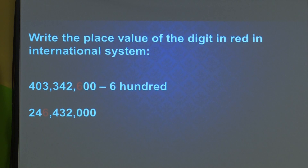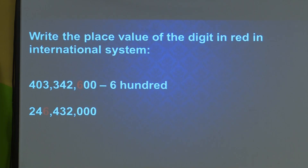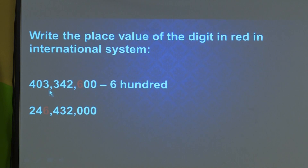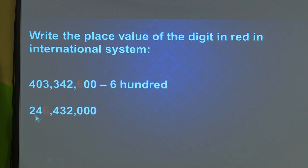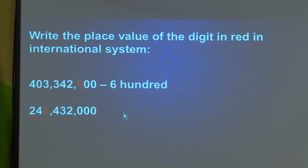Write the place value of the digit in red in the international system. After 3 digits, insert the comma. The sections are: ones, thousands, and millions. Here the digit 6 is in the millions place, so its place value is 6 million. Similarly, if 4 is in the millions place, its value is 4 million.